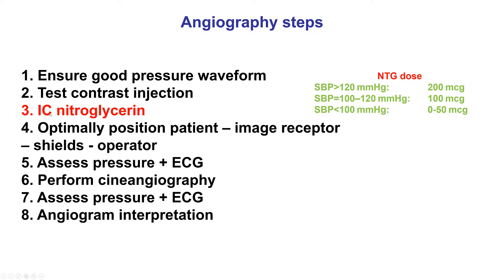Step three is to give intracoronary nitroglycerin. This is a critical step and should be done in all patients unless they are hypotensive. The reason is that the coronaries are dynamic structures and they can go into spasm that can interfere with the interpretation of fixed coronary stenosis. The dose of nitro is usually 200 mcg in normotensive patients, 100 mcg in patients with blood pressure between 100 and 120, and 0 to 50 mcg in patients with systolic blood pressure less than 100 mmHg.